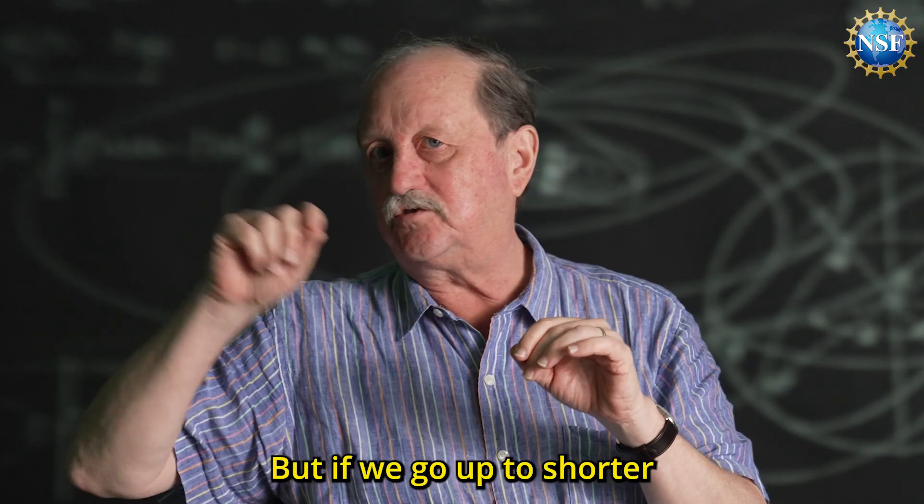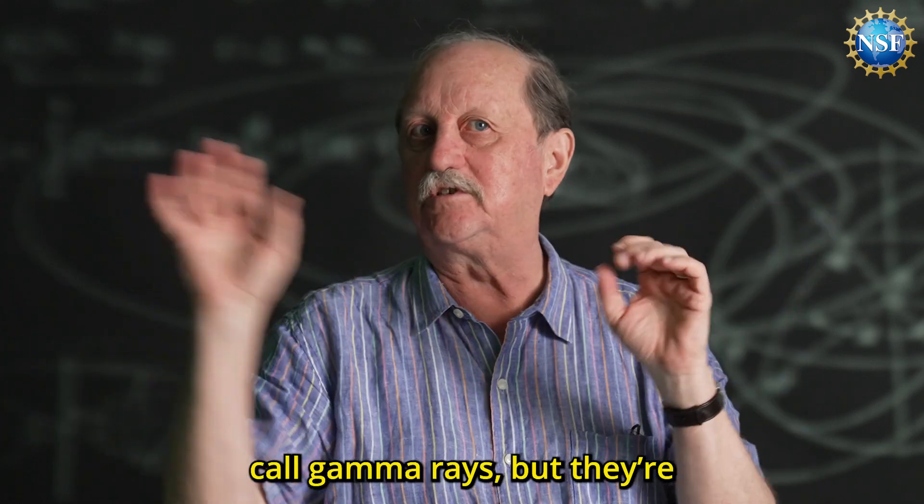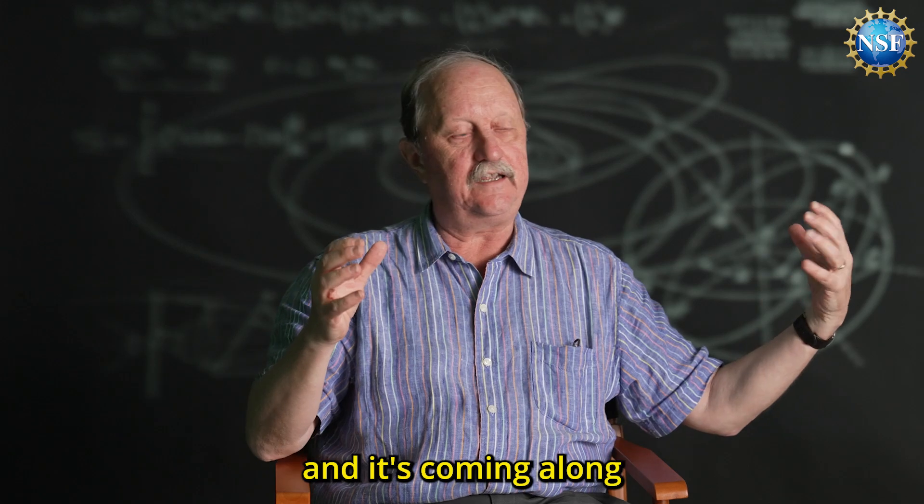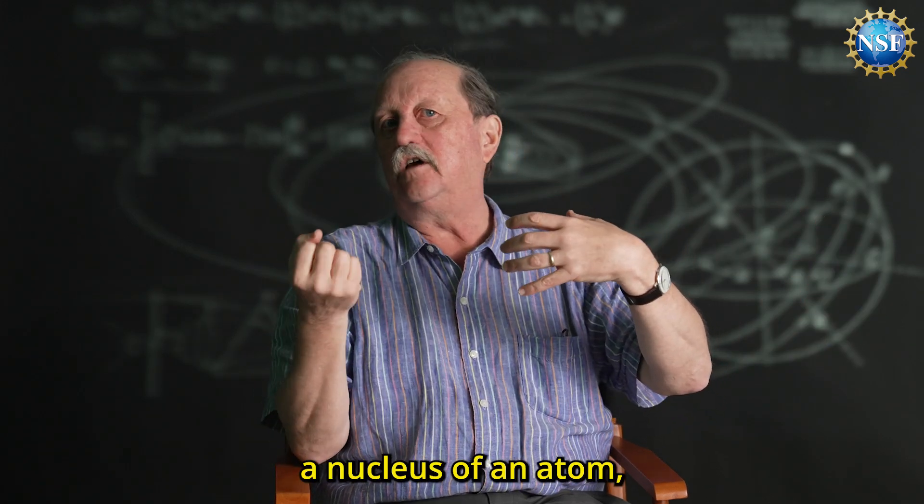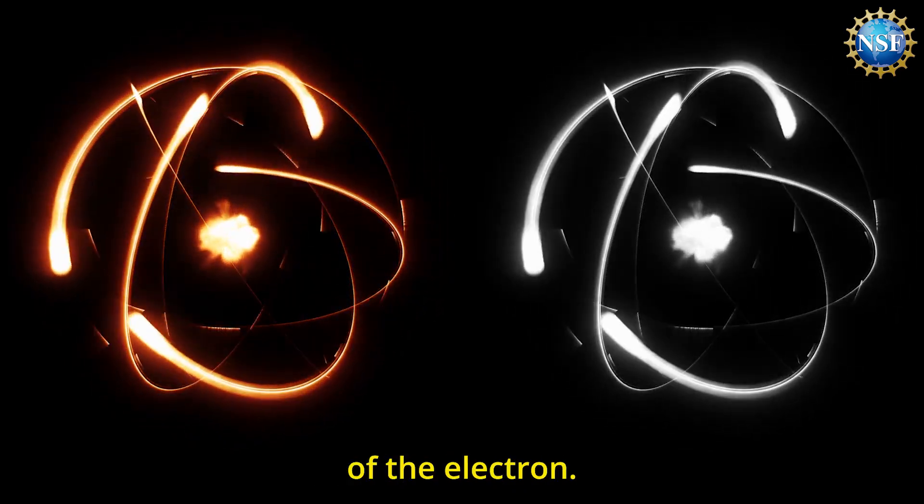But if we go up to shorter wavelengths of light - ultraviolet, x-rays - we get to something we call gamma rays, though they're really just light. If you take this big beefy photon coming along with all this energy, and it hits, say, a nucleus of an atom, it can produce two particles with the mass of the electron.